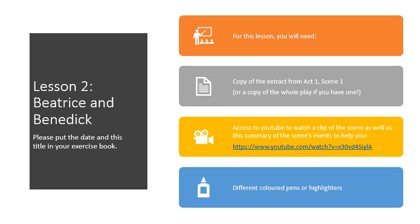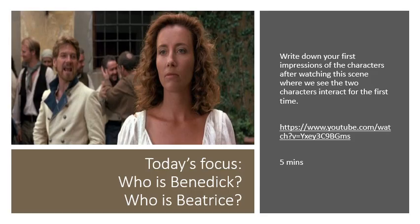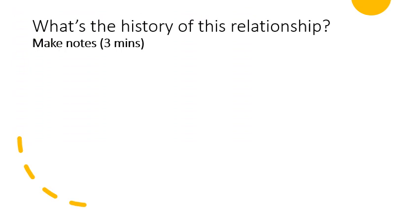I know a lot of you have got a copy of Much Ado About Nothing — if you can get your hands on one, buy one or borrow one. If you don't have access to that, it doesn't matter because I'll be putting the extracts onto Class Charts as we go along. You also need to be able to watch a clip of the scene — there's a link there — as well as this summary of the scene's events. Some different colored pens or highlighters would help. After watching the scene, write down your first impressions of the characters when we see the two characters interact for the first time.